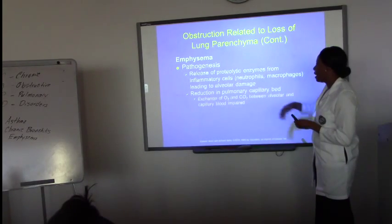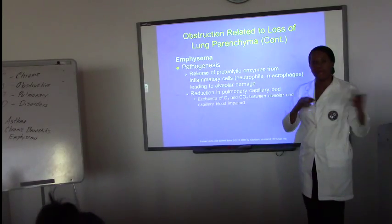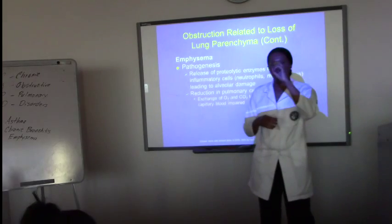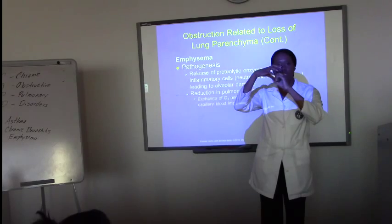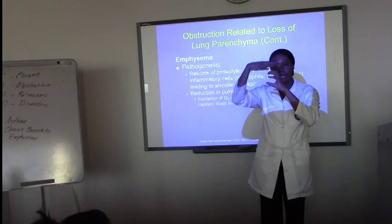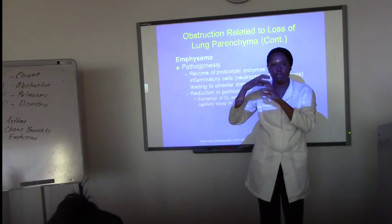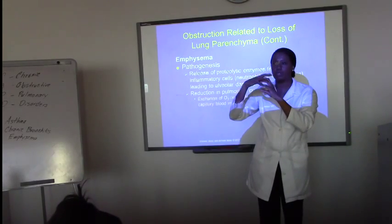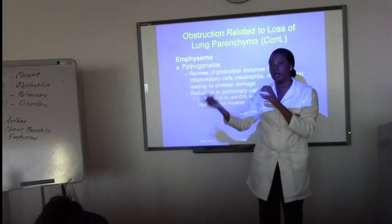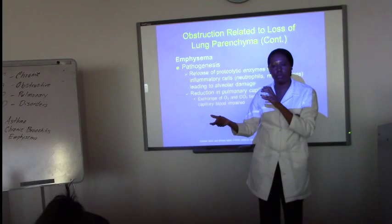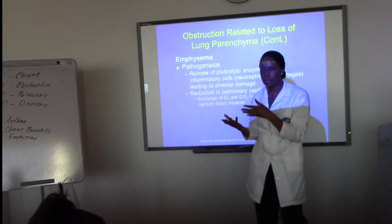There is also a reduction in the pulmonary capillary bed. If you remember, capillaries sit over the alveoli. So if the alveoli are being torn away, the next structure — the capillaries — are also going to be destroyed. Once you destroy the capillaries, these individuals no longer have proper oxygen and carbon dioxide exchange because the capillaries are gone.